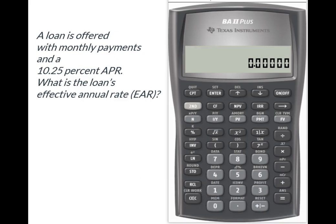I'm going to use the interest conversion function that's right there at your 2 key. I'll access it using the second key to enable it, and because it works like a worksheet in the calculator, I'll be moving around using my up and down arrows.